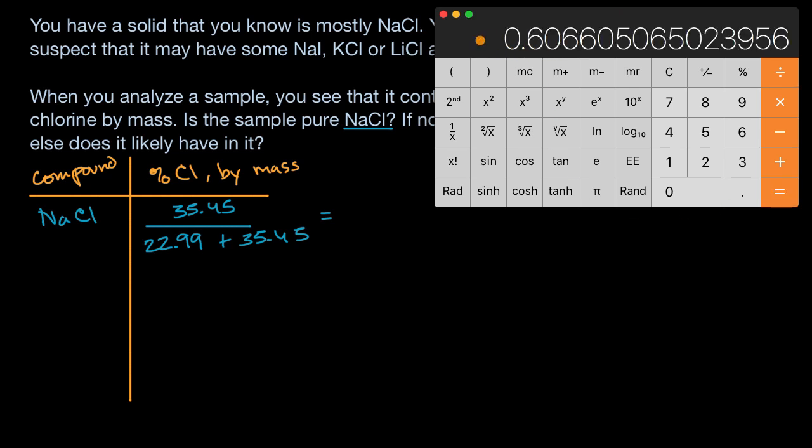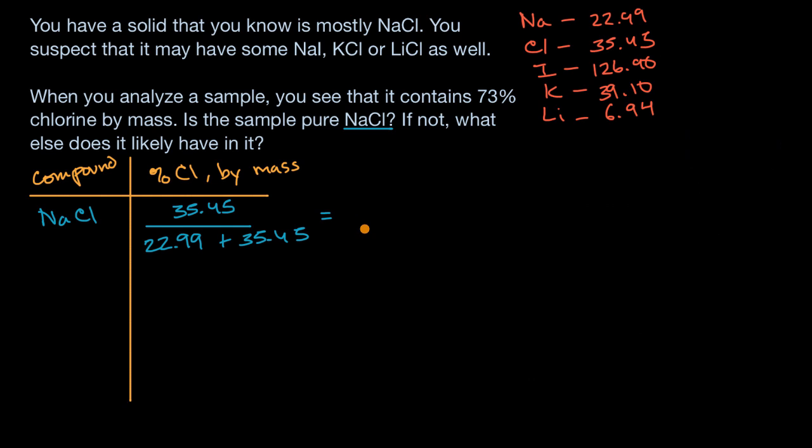It looks like it's a little bit over 60%, and that's actually enough for us to go on. If this is approximately 61%, we see that that's very different than 73%. So already it's very clear that to the first question, is the sample pure sodium chloride? No, it's not, because it has a different percentage of chlorine by mass than pure sodium chloride would. So it must have been mixed in with something that has a higher percentage of chlorine by mass.